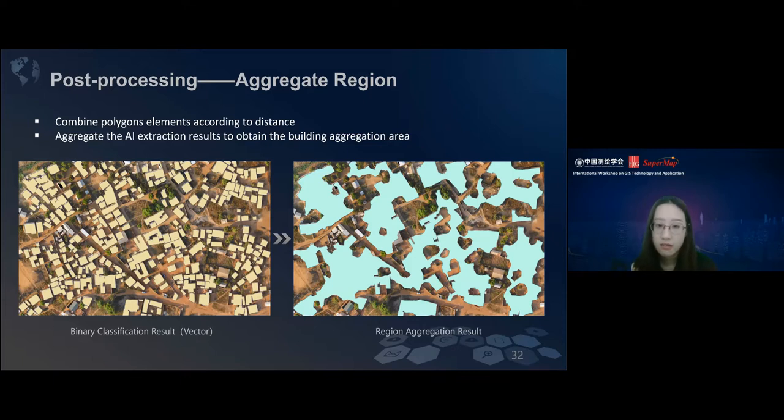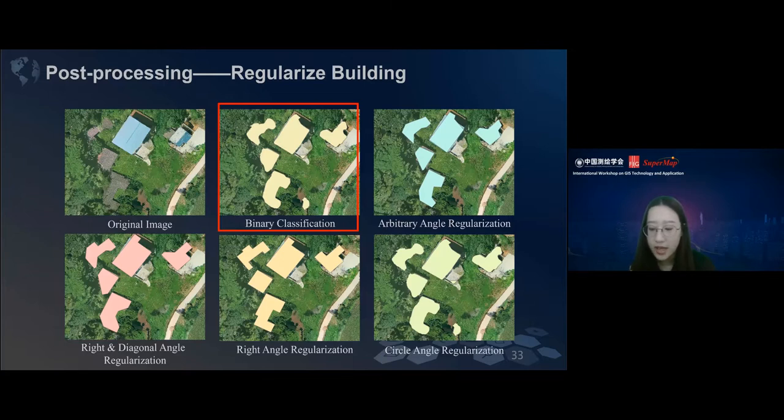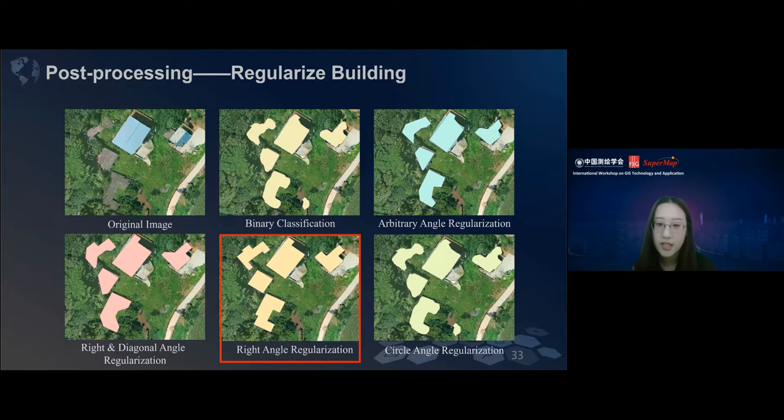Aggregate region tools can aggregate the AI extraction result to obtain the building aggregation areas. Regularize building tool is an amazing tool that I want to share with you guys. You can see this is the binary result. You can compare it with our original image. You can see the outline is round and it's not accurate. But after we use this tool, this is our result. You can see the boundary can be horizontal and vertical. Of course, we provide multiple regularization methods, like the arbitrary angle, the circle angle, and the right diagonal angle regularization method. You can choose the appropriate regularization method that's suitable for your data.